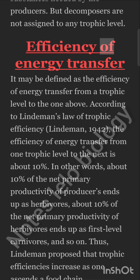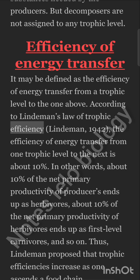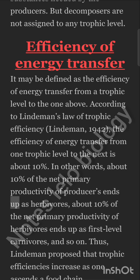Efficiency of Energy Transfer may be defined as the efficiency of energy transfer from a trophic level to the one above. According to Lindemann's Law of Trophic Efficiency (Lindemann, 1942), the efficiency of energy transfer from one trophic level to the next is about 10%. In other words, about 10% of the net primary productivity of producers ends up as herbivores, about 10% of the net primary productivity of herbivores ends up as first-level carnivores, and so on. Thus, Lindemann proposed that trophic efficiencies increase as one ascends a food chain.